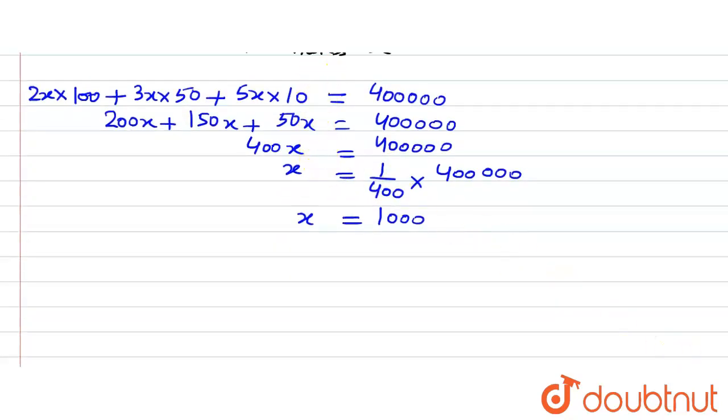Now we are asked in the question to find the number of notes of different denominations. So now we will find out number of rupees 100 notes. We assumed it to be 2x so it will be equal to 2 into x is 1000 so this will be 2000 notes.